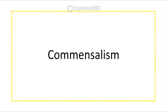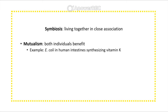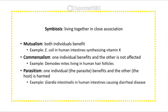Symbiosis is where organisms live in close association. It can take the form of mutualism, where both individuals benefit; commensalism, where one benefits but the other is neither helped nor harmed; and parasitism, where the parasite benefits and the host is harmed.